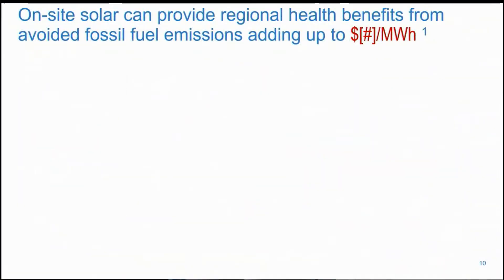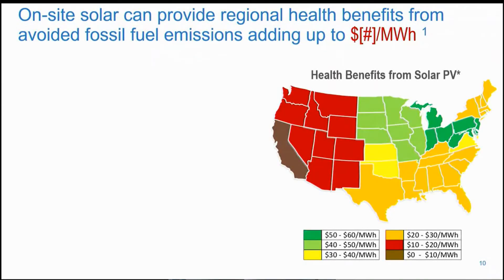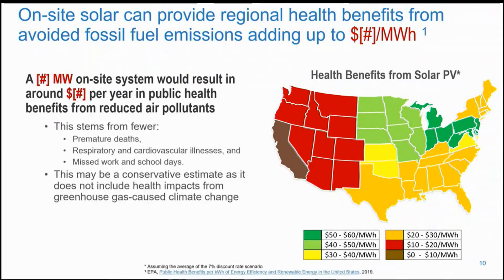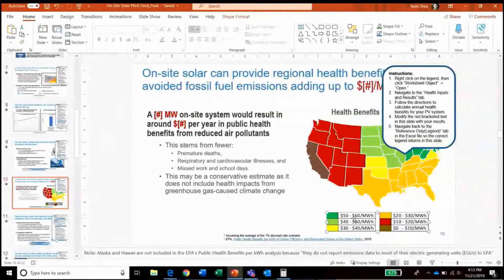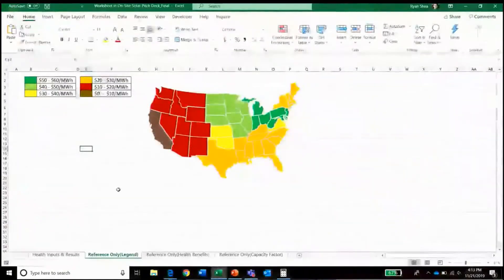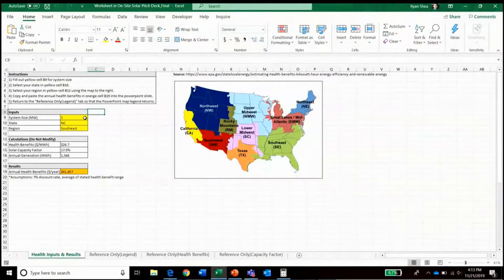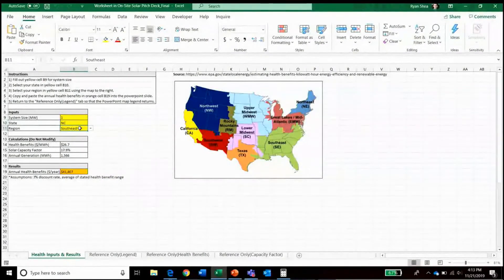Moving on to how on-site solar can provide regional health benefits from the avoided fossil fuel emissions, including a graph on the right which speaks to the health benefits in different regions, as well as the specific quantified health benefits of an on-site solar project. By right-clicking on the legend and opening the embedded Excel file, there are instructions to modify the user inputs in yellow — a one megawatt system size in North Carolina, which is in the region of the Southeast. This calculates that the annual health benefits would be on the order of around $41,800.